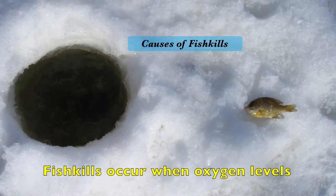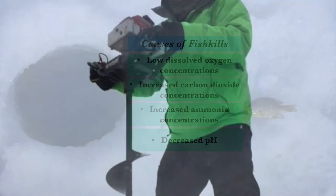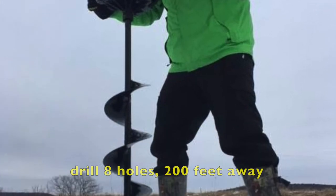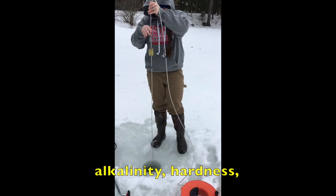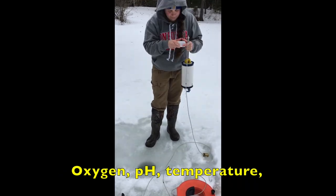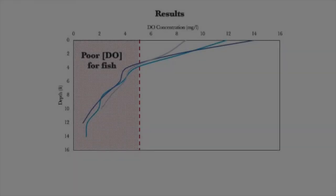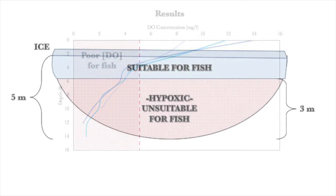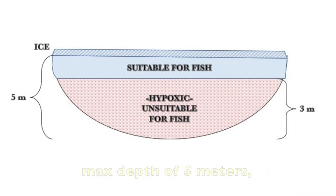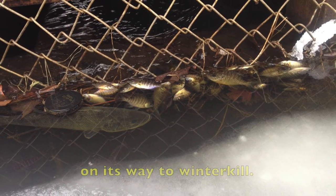Due to the harsh winter months experienced in this area, winter fish kills often occur. Fish kills occur when oxygen levels dip below 5 ppm, carbon dioxide and ammonia concentrations increase, or pH decreases. A powered ice auger was used to drill 8 holes, 200 feet away from each other, along the maximum length of the water body. Water was sampled through the ice for hydrogen sulfide, alkalinity, hardness, and ammonia concentrations. Oxygen, pH, temperature, conductivity, and total dissolved solids (TDS) were also recorded at 2-foot increments. It was found that levels of dissolved oxygen fell below 5 ppm after 2 meters of depth. This meant that in a pond with a max depth of 5 meters, 3 meters were hypoxic and this area was therefore uninhabitable for most fish. This shallow pond would not support a healthy fish community in that limited space and was most likely on its way to winter kill.